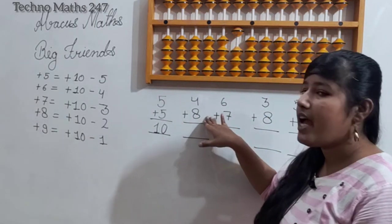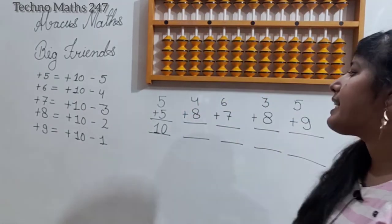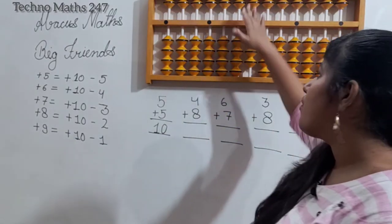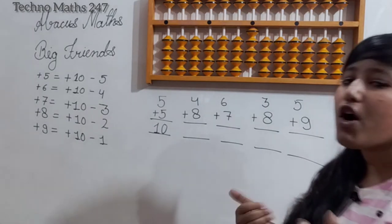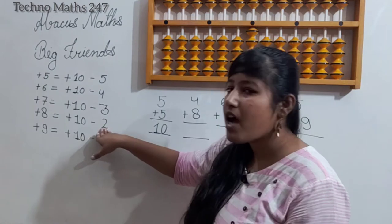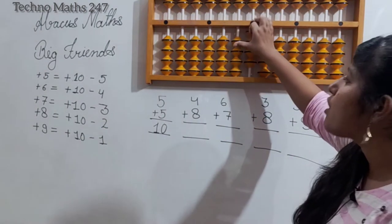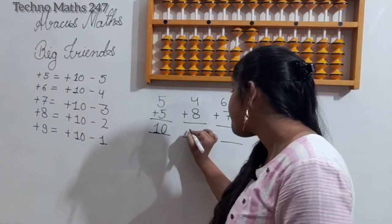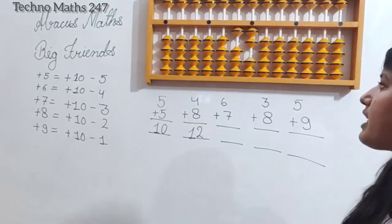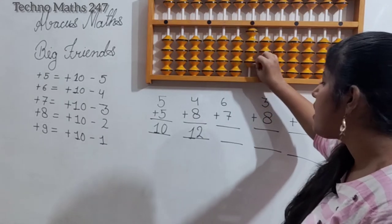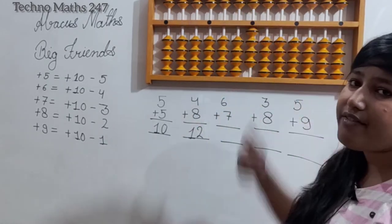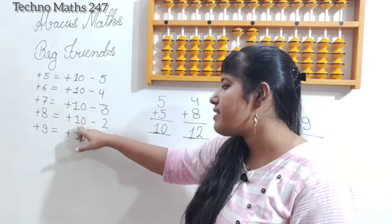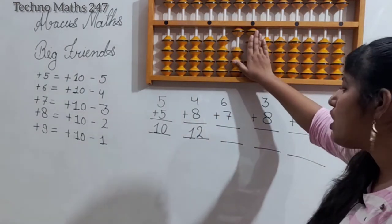Next: plus 4 plus 8. We enter plus 4. Now do we have 8? No, we only have 5 remaining, so we don't have 8. We go to the big friend of 8, which is plus 10 minus 2. We apply plus 10 minus 2, and the answer is 10 plus 2, which is 12. Let's see once more: enter 4, we don't have 8, so we apply plus 10 minus 2 — the big friend of 8 is plus 10 minus 2 — giving us 10 plus 2, which is 12.